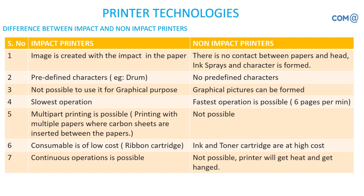Continuous operation is possible. Even in government building sections and other areas, people continuously print with the help of this impact printer. They use papers with holes on both sides, feed the paper into the paper roller, and it has a grip so it can move accordingly to help take printouts.